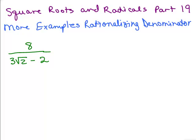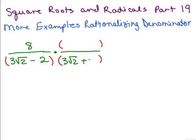Here's an example: 8 over 3 square roots of 2 minus 2. You've got a binomial in the denominator, so we need to multiply the numerator and denominator by the conjugate of what's in the denominator. We want to multiply both the top and bottom by 3 square roots of 2 plus 2.